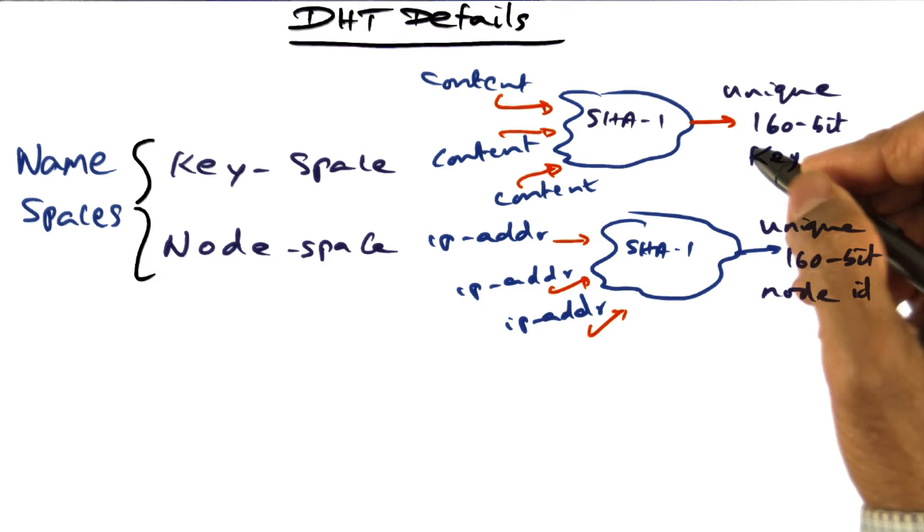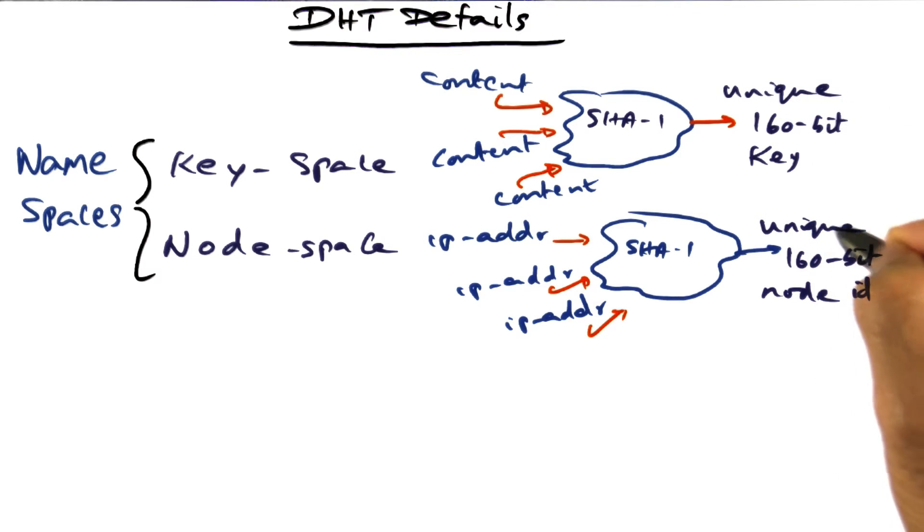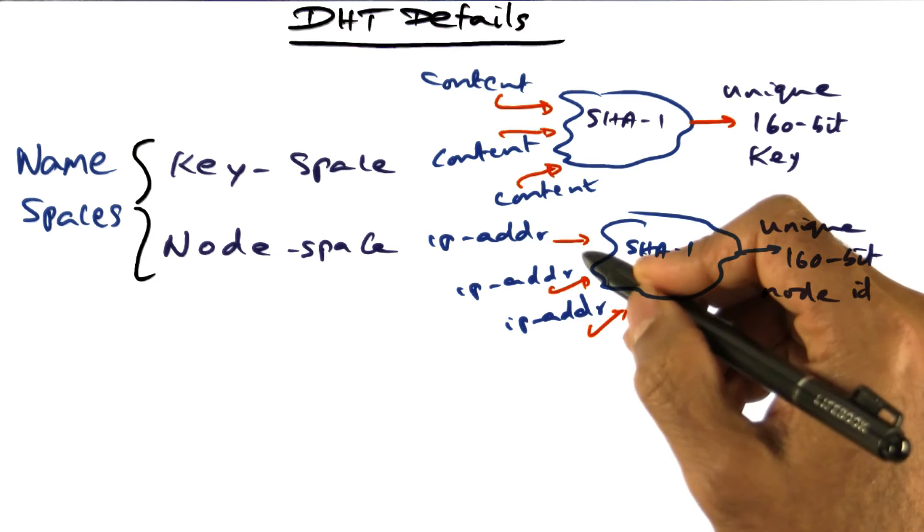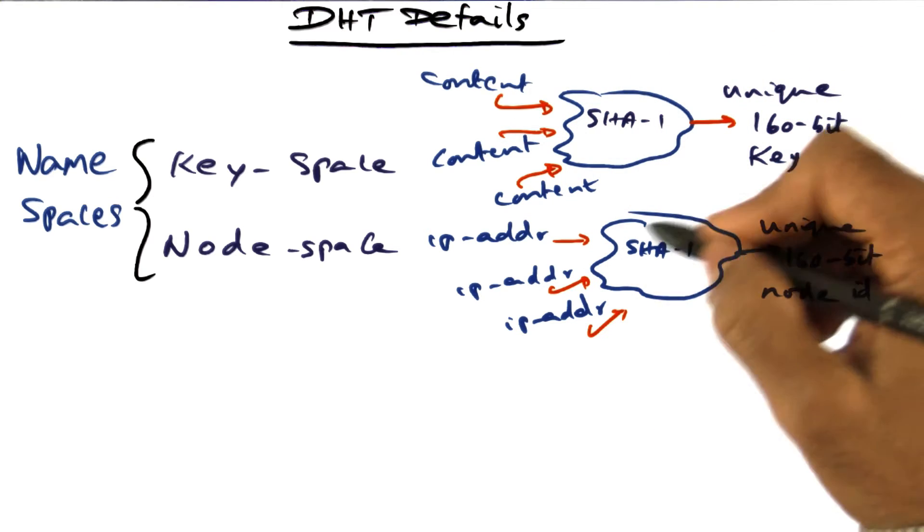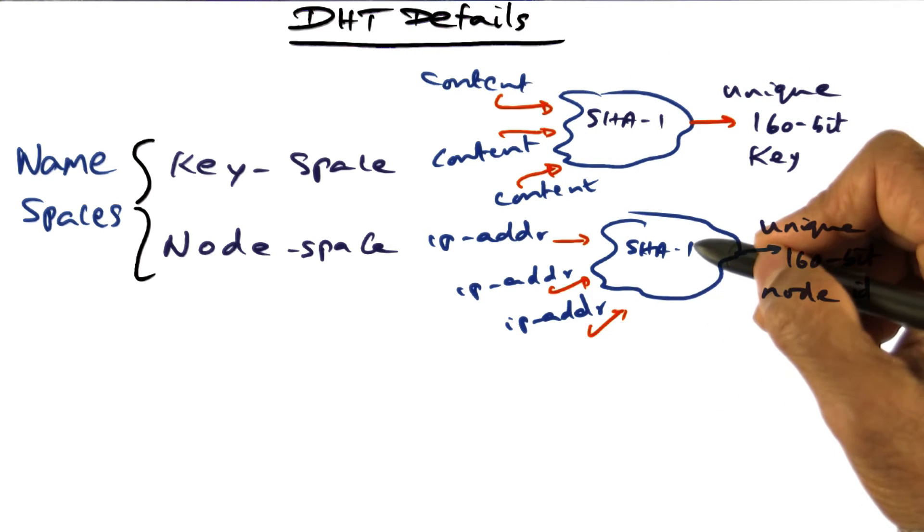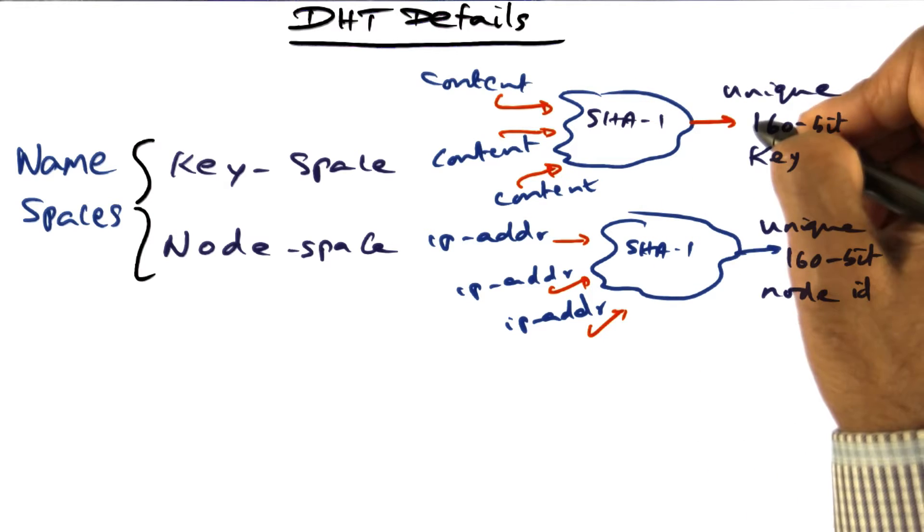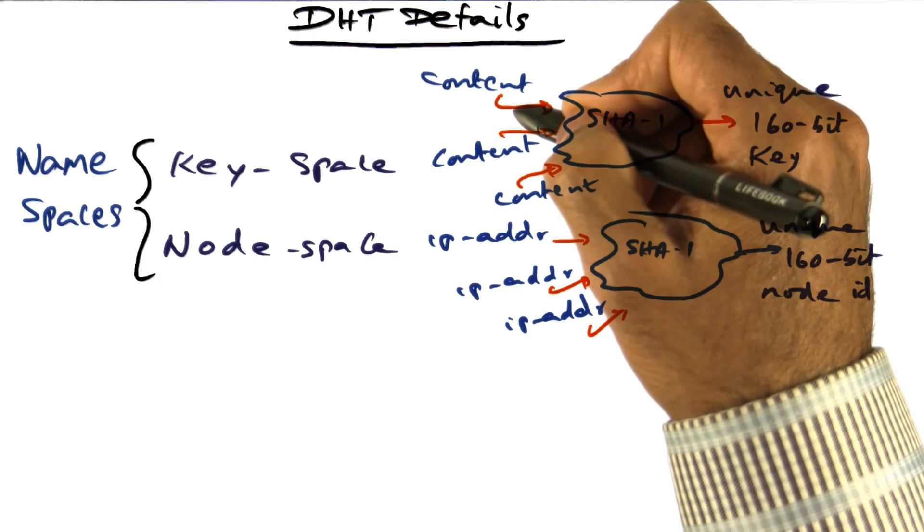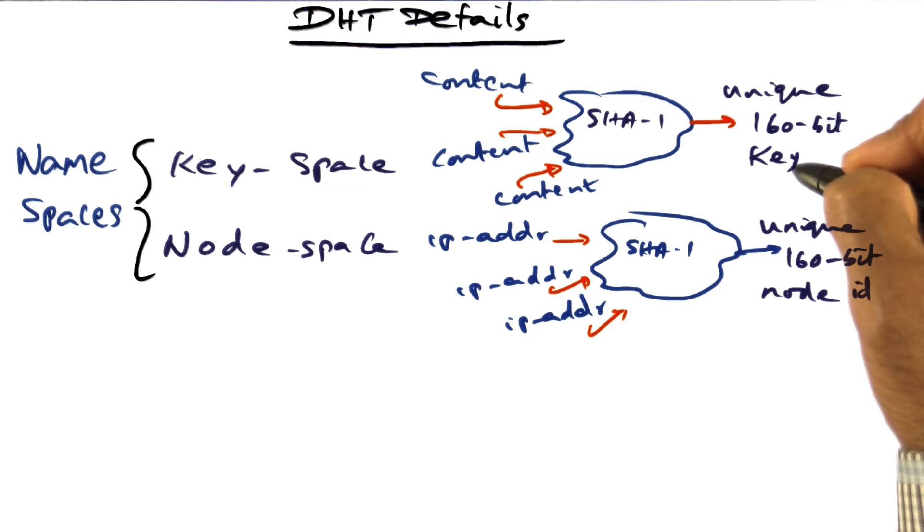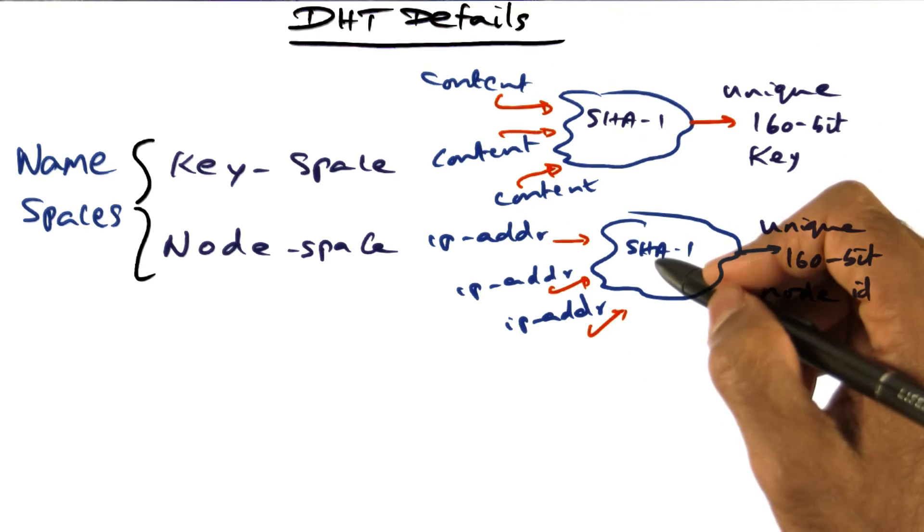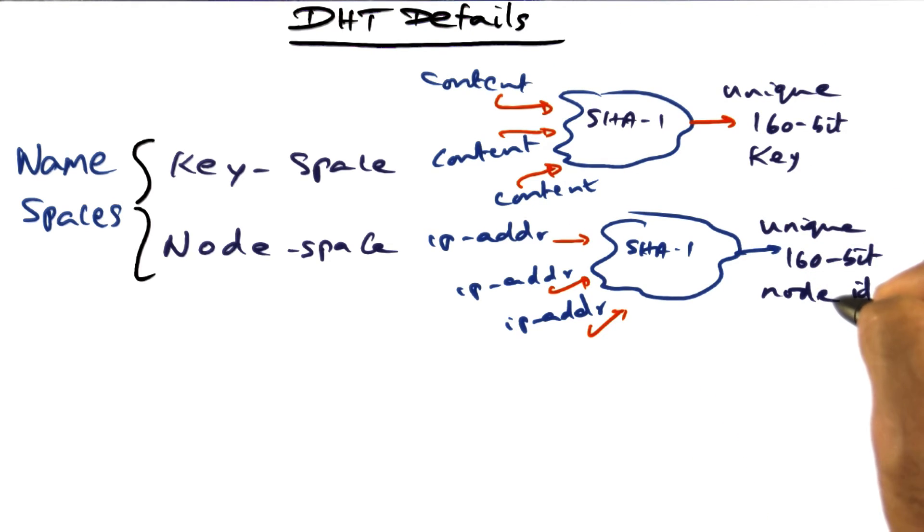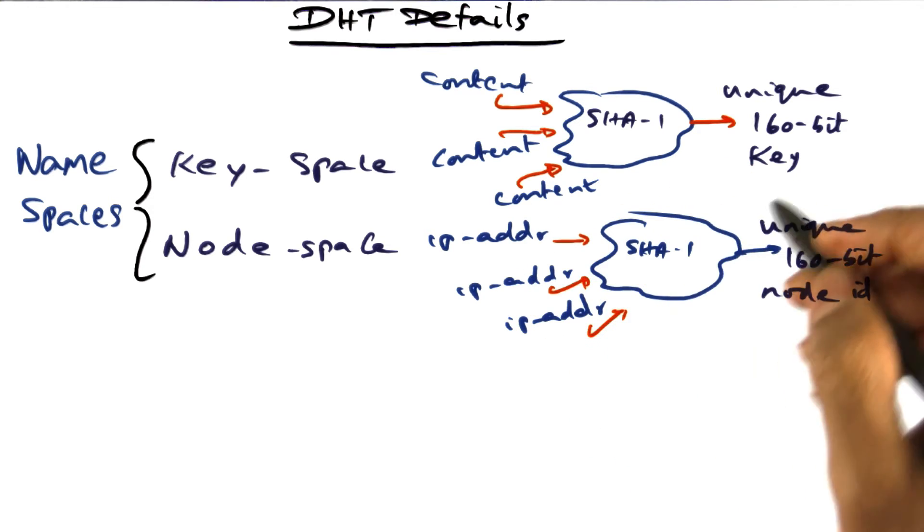So now we've got two namespaces. One is the key space namespace and the node space namespace. And both of them are derived using the same algorithmic technique. In this case, we've created a key for the content so that there's a unique signature for a particular content. Similarly, we've created a node ID from the IP address, which is again a unique signature for a particular IP address.